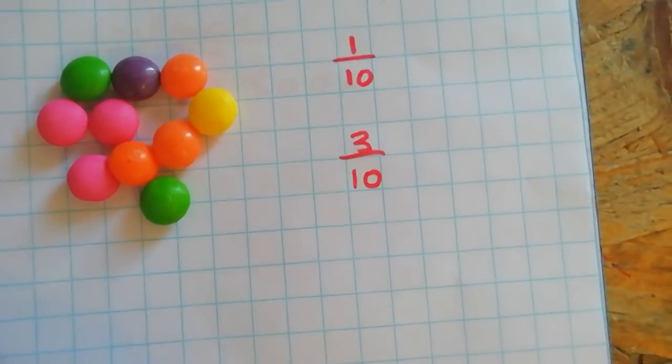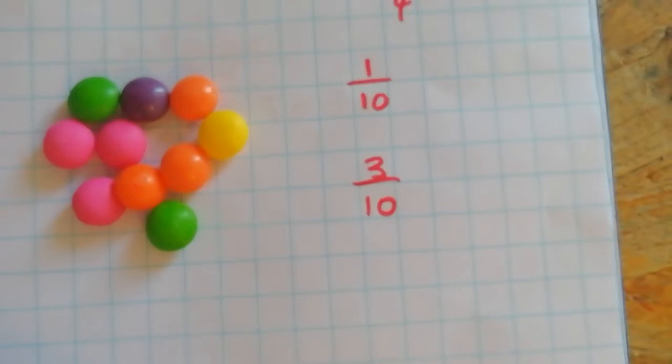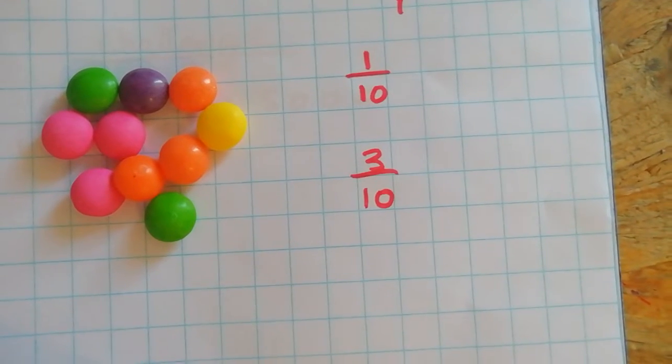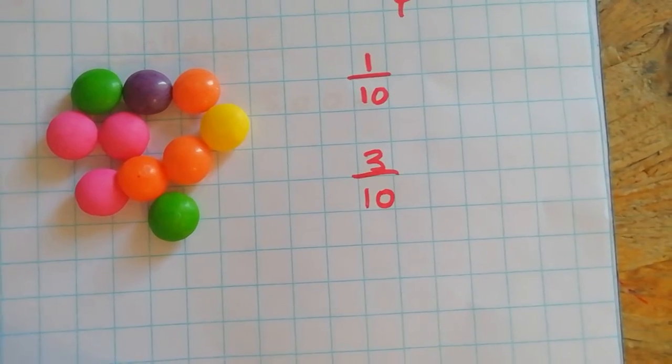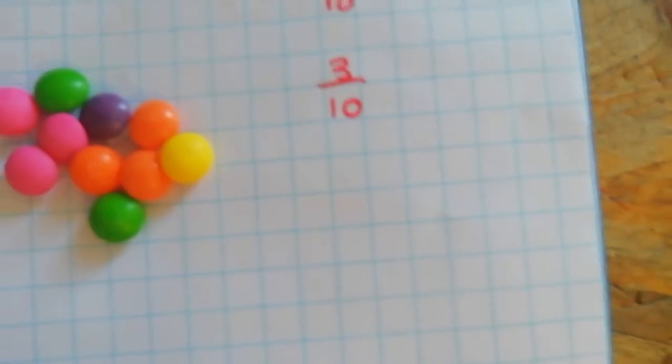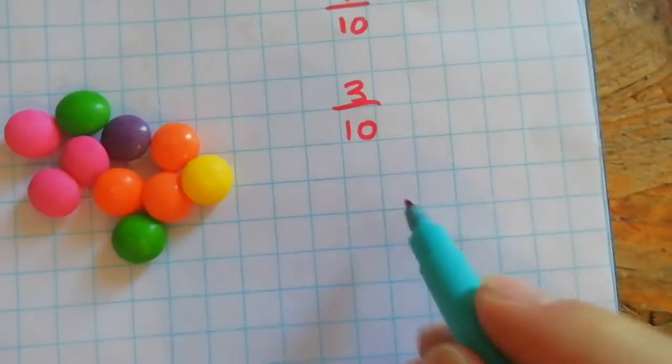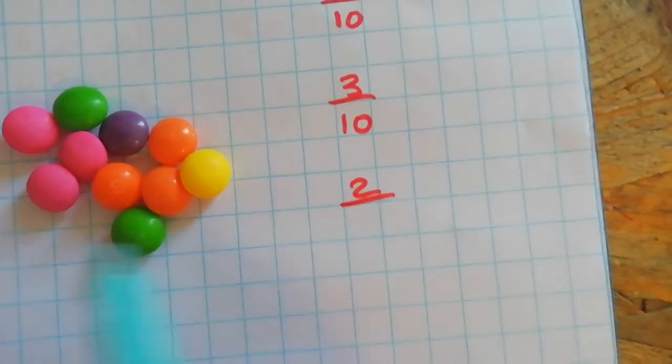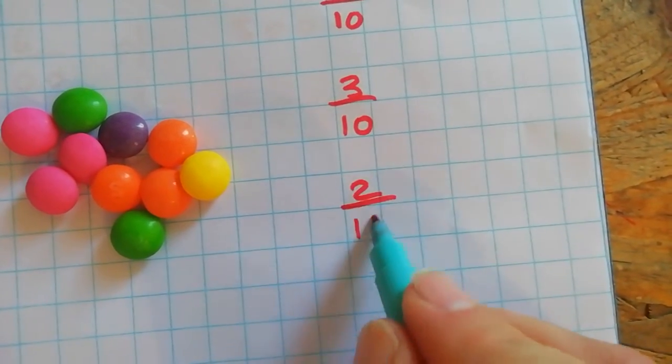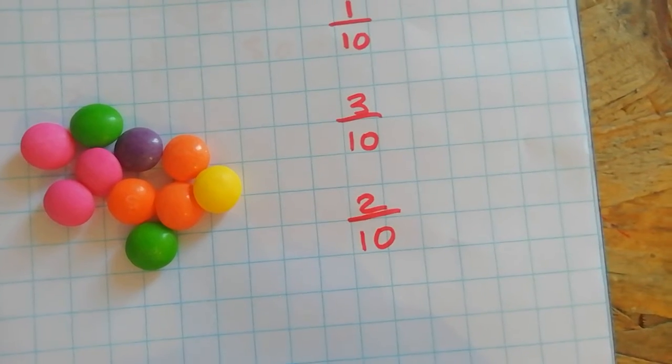What fraction of these sweets are green? Have a go at that one yourself. Think about it now, shout out your answers. Yes, good work! So I can see two green ones out of a total of ten as we know, so it's two tenths which are green.